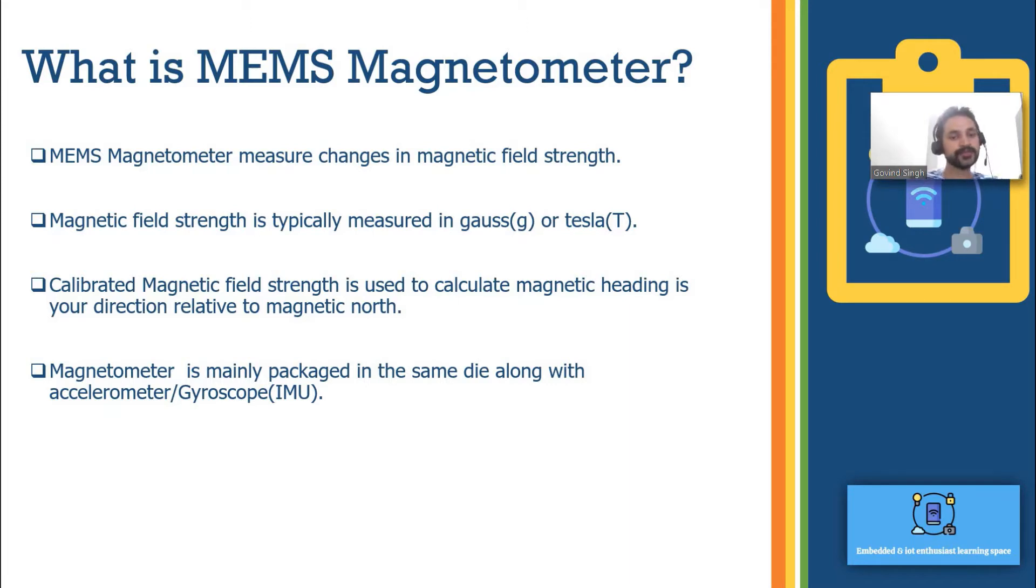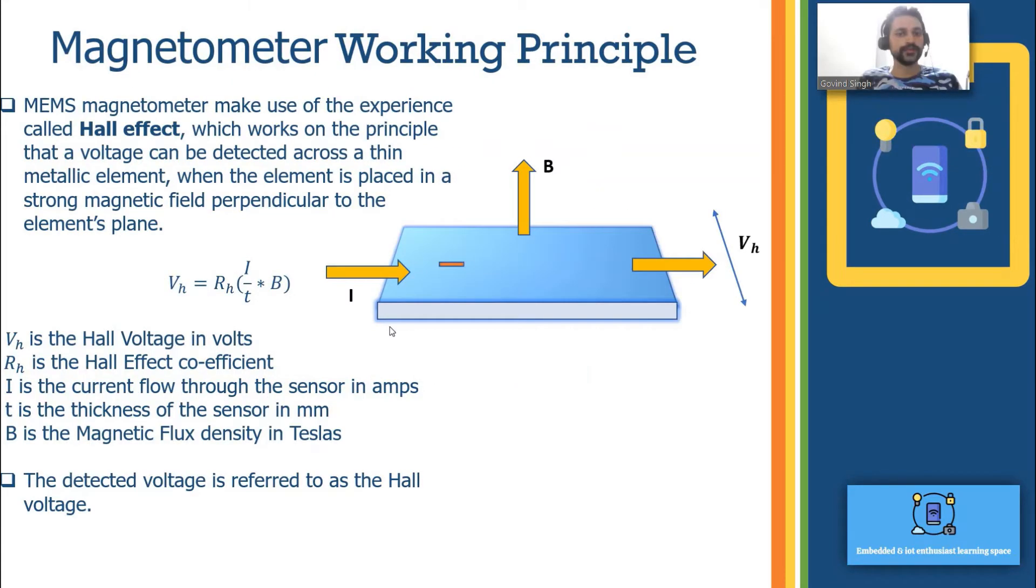Magnetometer is mainly packaged in the same die along with accelerometer and gyroscope. Typically it's packaged with gyroscope because we need tilt compensated compass. We need to do the tilt compensation with respect to the gyroscope. Now let's discuss the magnetometer working principle.